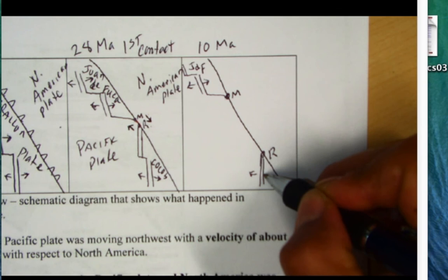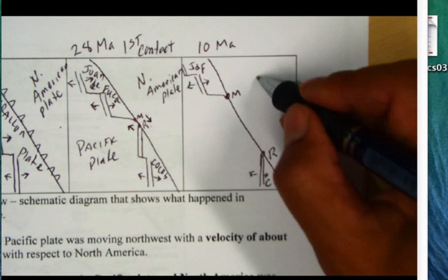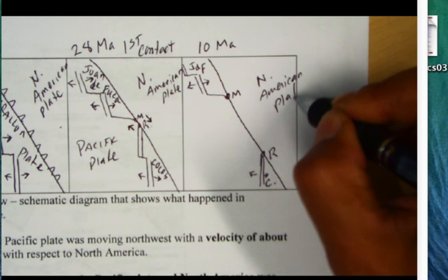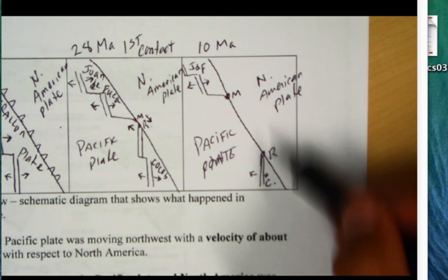Then offshore over here we see seafloor spreading and we're going to have our Cocos plate down there. Again this is North America or the North American plate and then this is the Pacific plate here. So now we have quite a bit of contact now. We have the Pacific plate over here in contact with North America plate.